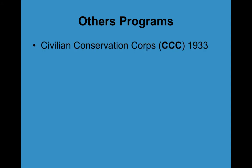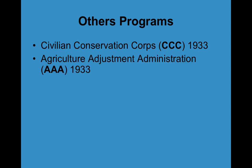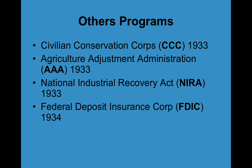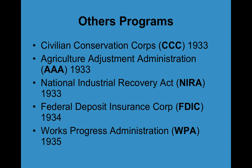Other programs you're going to read about include: the CCC or Civilian Conservation Corps; the AAA or Agricultural Adjustment Administration; the NIRA or National Industrial Recovery Act — sometimes called the NRA, not to be confused with the National Rifle Association; the FDIC or Federal Deposit Insurance Corporation, which still exists today and you see it in banks; the Works Progress Administration; and the Social Security Act.